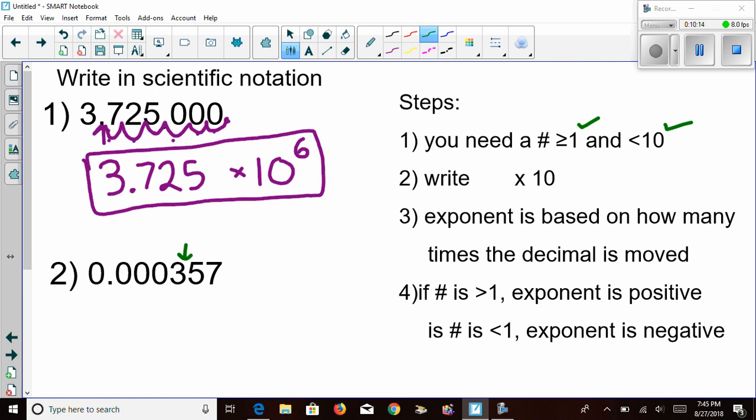I would move the decimal one, two, three, four times to its new location, giving me 3.57. I need to do step two and write my times 10. And now I need to write my exponent. We moved the exponent four spaces.